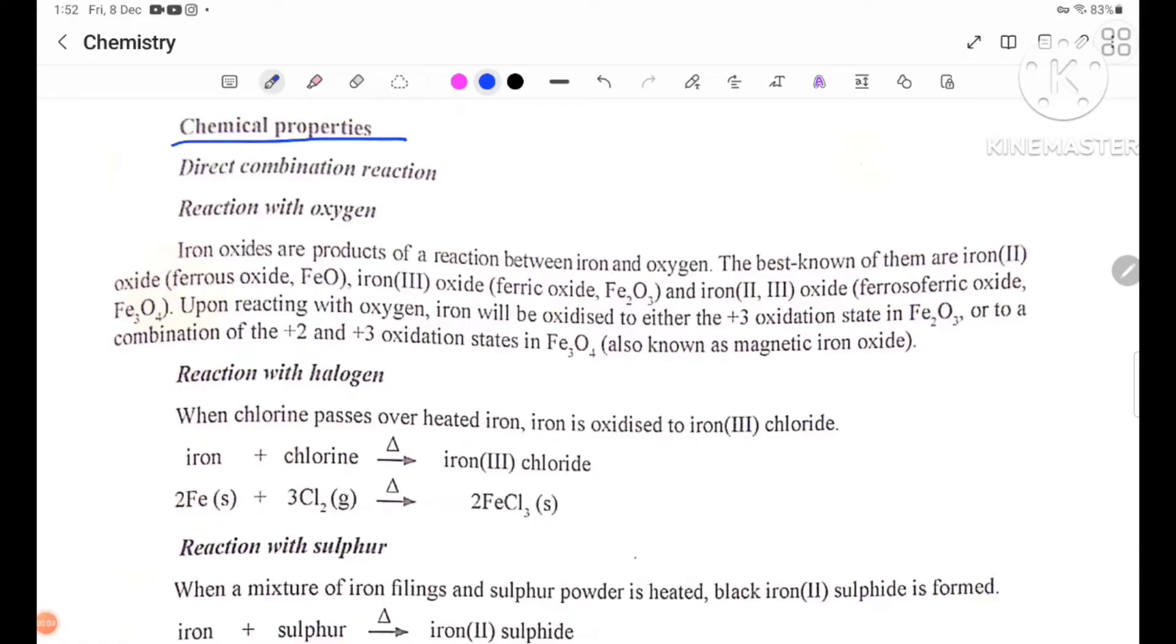Chemical properties. Direct combination reaction. Reaction with oxygen. Iron oxides are products of a reaction between iron and oxygen. The best known of them are iron(II) oxide, ferrous oxide FeO.